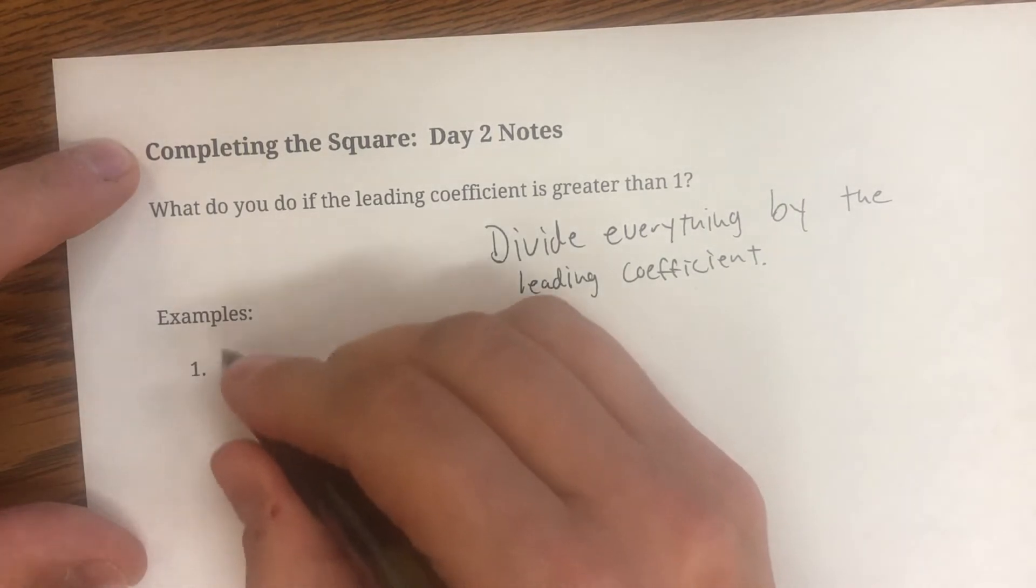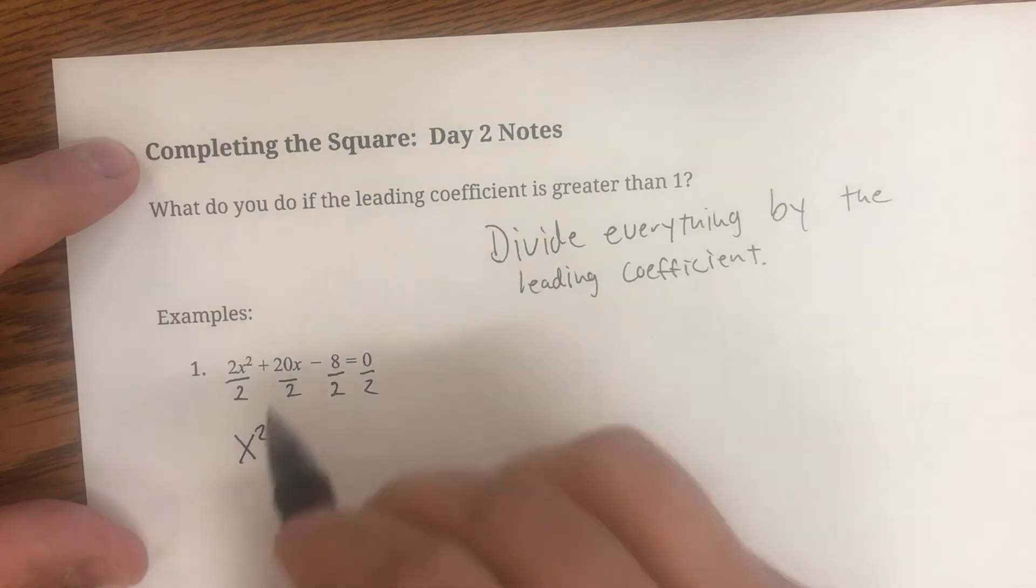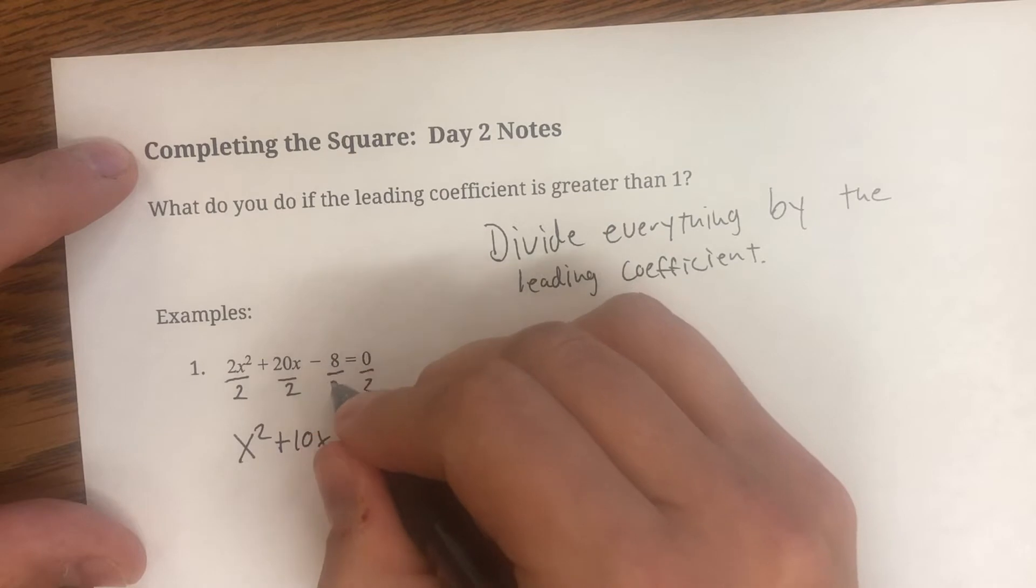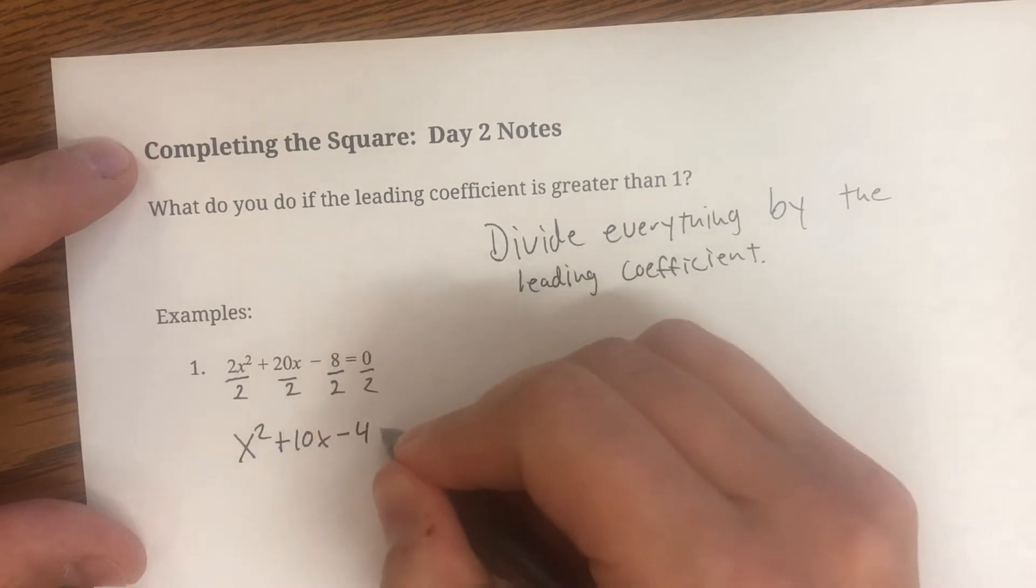So when we divide everything by two, two over two is just going to be one. So now our leading coefficient is one. We have an x squared. 20 over two is 10x, and negative eight divided by two is negative four. And zero divided by anything is zero.